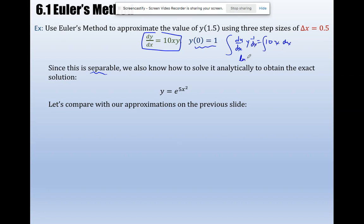And I get ln of y is equal to 5x squared plus c. They want me to plug in 0 and 1. So I get ln of 1 which is 0. C is 0. So I have ln of y is equal to 5x squared. Raise both sides, e to the, and y is equal to e to the 5x squared.